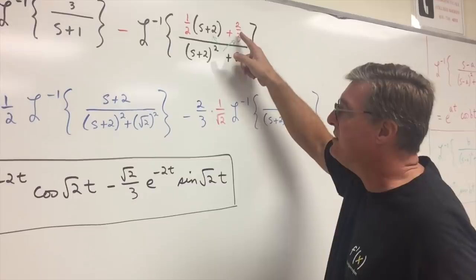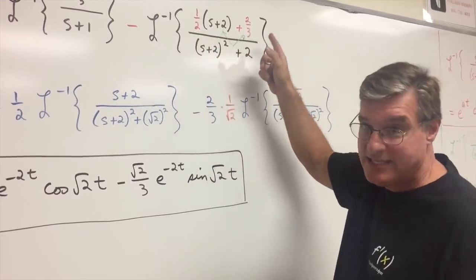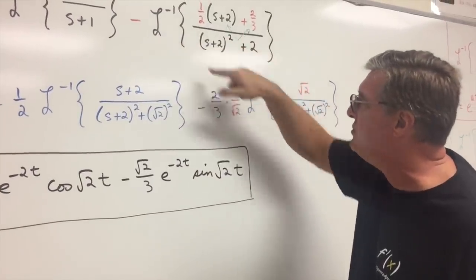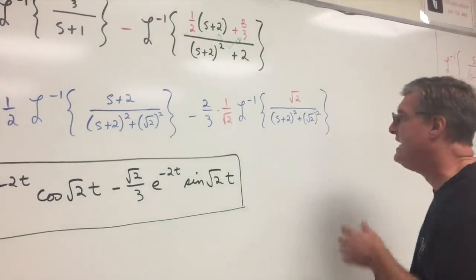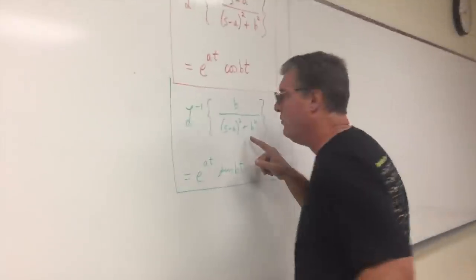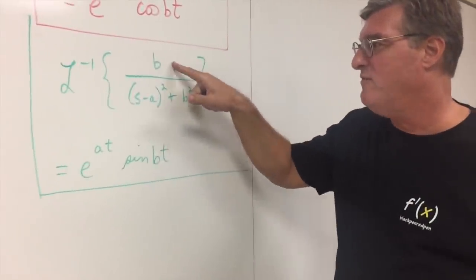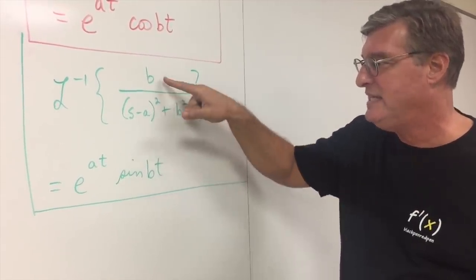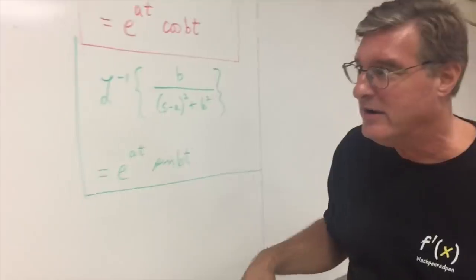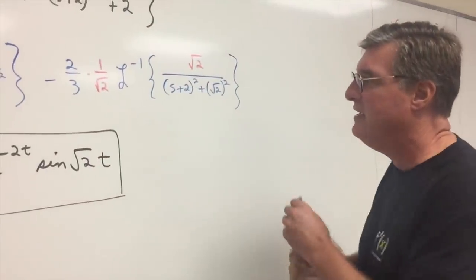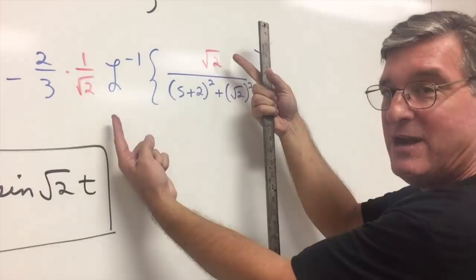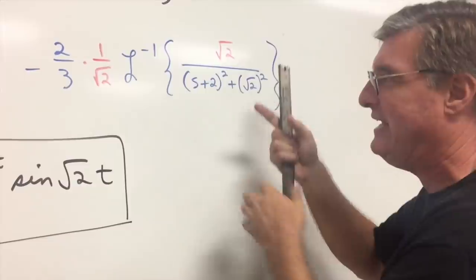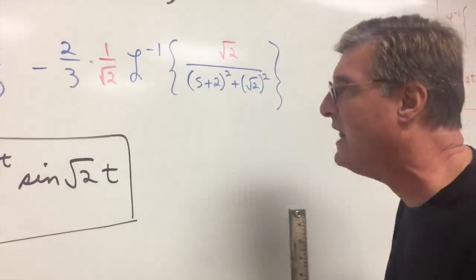Here, when you pull out the 2/3, be careful, because my class today, they forgot about that other negative that's out there. So that's a negative 2/3 out in front. But you see, now on this one, remember the inverse Laplace transform of b/[(s-a)² + b²] is e^(at)sin(bt). So I need a b in the numerator. My b is √2. So you need to multiply and divide by √2 here. You know, it's not like doing integrals where you can let u be something and then take a differential. You have to kind of fix it up like this.